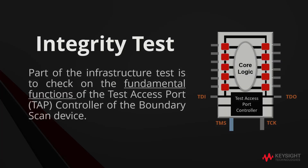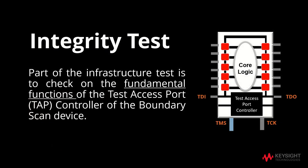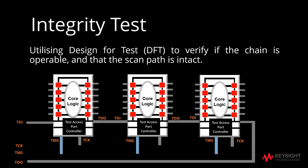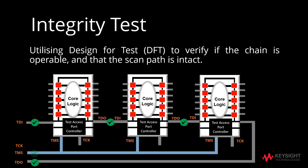Integrity test is part of the infrastructure test, and it is used to check on fundamental functions of the test access port controller register within the boundary scan device. Through integrity test, we will be able to ensure that the boundary scan devices on the chains are functioning correctly and therefore able to execute boundary scan test. By utilizing the design for test, integrity test verifies if the chain is operable and that the scan path is intact.